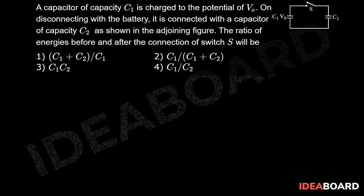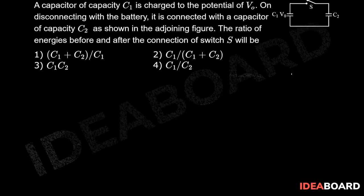A capacitor of capacity C1 is charged to potential V0. On disconnecting from the battery, it is connected with a capacitor of capacity C2, as shown in the adjoining figure. We need to find the ratio of energies before and after the connection of switch S. Initially, the capacitor is being charged.